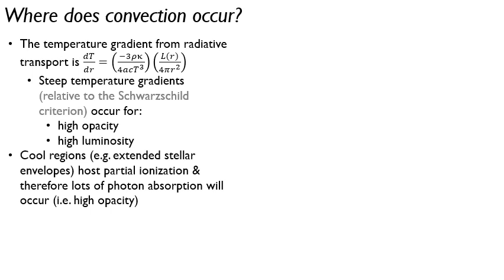So for instance, if we have a really cool region, like an extended stellar envelope that's very far from the core, then you're going to have partially ionized hydrogen there. Therefore, there's going to be lots of opportunities for photon absorption. So you're going to have a high opacity. So that's one way you can do it: high opacity will give you a steep temperature gradient and cause convection.